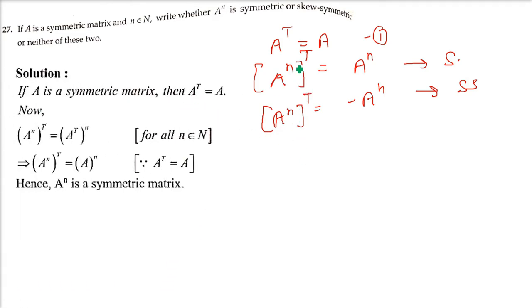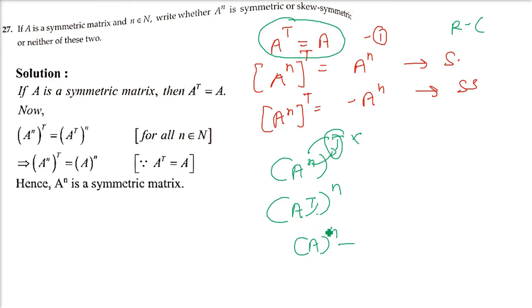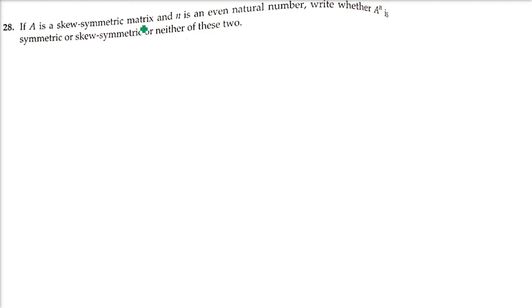Using the property that (Aⁿ)ᵀ = (Aᵀ)ⁿ, and since Aᵀ = A, we get (Aⁿ)ᵀ = Aⁿ. Since the transpose equals the original matrix, Aⁿ is symmetric for any natural number n when A is symmetric.